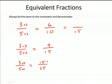They're all the same fractions. So we can say that 3 fifths is the same as 6 tenths, which is also the same as 9 fifteenths, which is also the same as 15 twenty-fifths. And there's an infinite number of equivalent fractions.